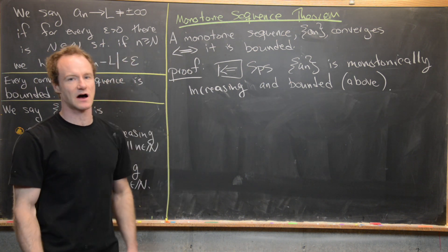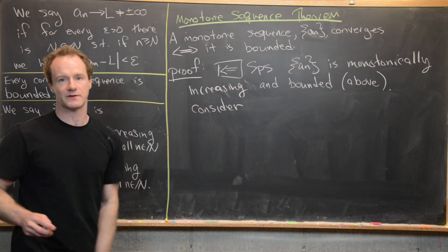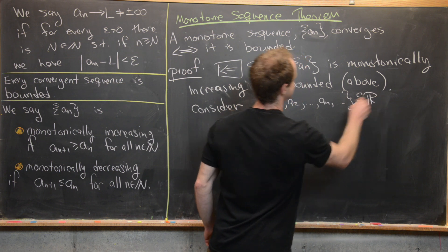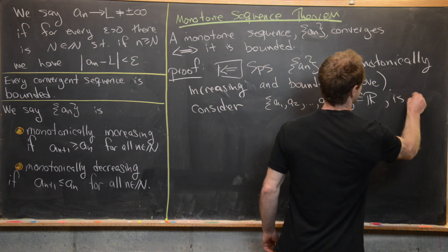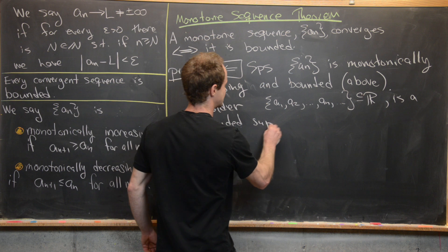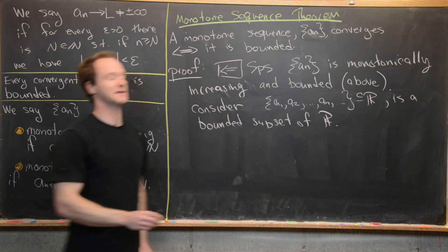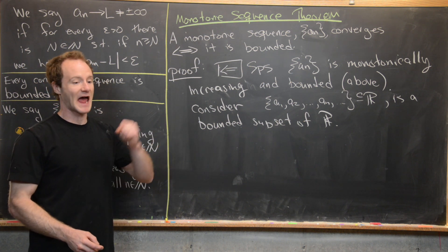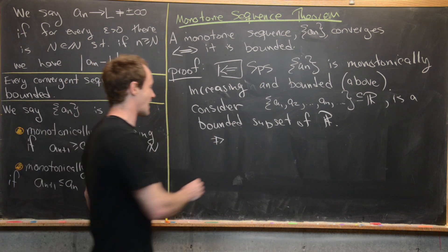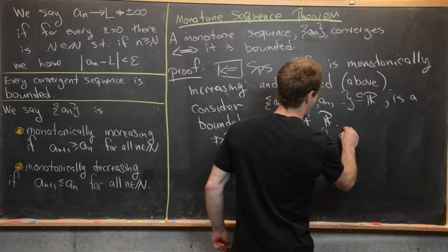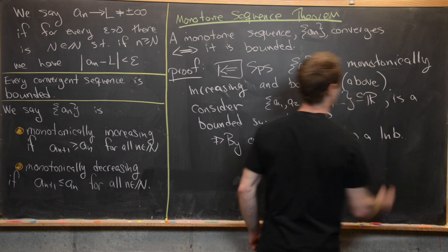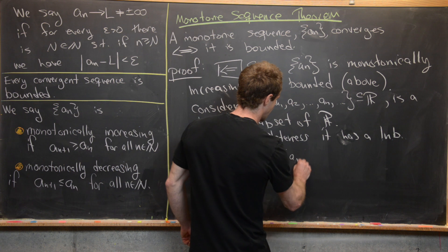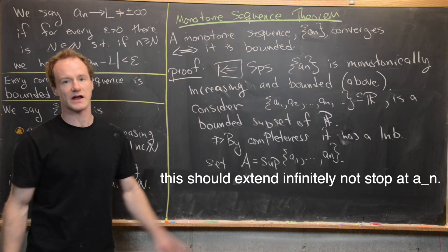Now consider the set built out of the sequence, containing every element: {a_1, a_2, ..., a_n, ...}. This is a subset of the real numbers, and furthermore it is a bounded subset — bounded above. By the completeness axiom, every subset of the real numbers that is bounded above has a least upper bound. So by completeness, this set has a least upper bound. We call that the supremum, and we set a equal to the supremum of {a_1, a_2, ...}.